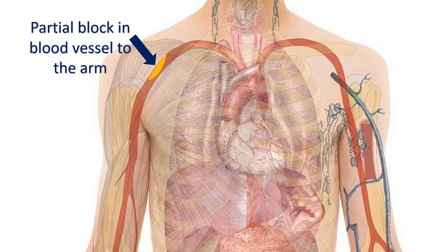Partial obstruction of one blood vessel is an important reason for lower blood pressure in that arm. Obstruction of a blood vessel in the arm is a pointer to disease of blood vessels elsewhere in the body. Those affected are more prone to heart attack and stroke due to disease of their blood vessels.